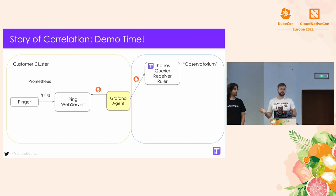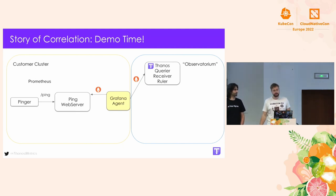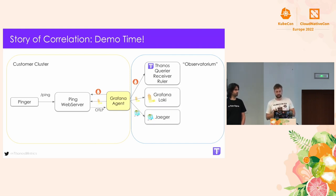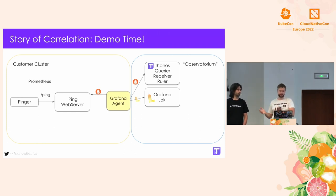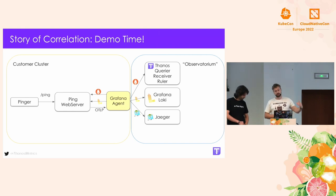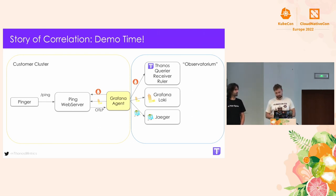We have metrics propagated to Observatorium — but we want more. Grafana Agent also tails logs from the ping server and sends them to Grafana Loki, which is essentially Prometheus but for logs. We store logs in our centralized cluster. Similarly for tracing, we use the OTLP push API from OpenTelemetry, pushing to Grafana Agent, which forwards in Jaeger format to Jaeger — currently using simple in-memory storage.